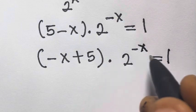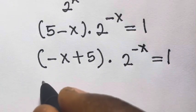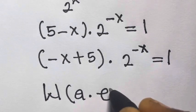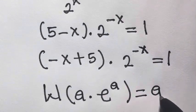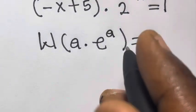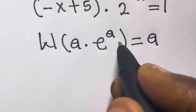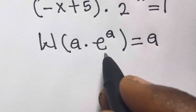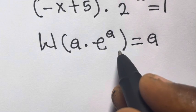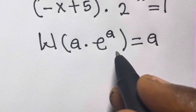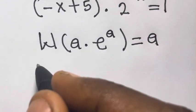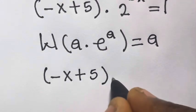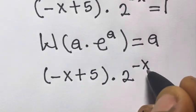Before we proceed, note that the Lambert W function of a times exponential a equals a. Having noted that, let's try to create the Lambert W function form on the left-hand side. From minus x plus 1 plus 5 times 2 raised to power minus x equals 1, we want to create the same powers.